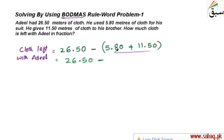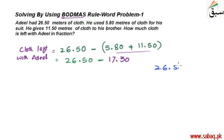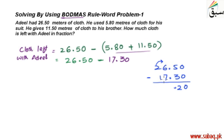So we have 17.30 meters to subtract. Looking at the place values for 26.50 minus 17.30: at the 100ths place we have 0; at the 10ths place, 10 plus 1 is 11, minus 7 is... wait — 16 minus 7 is 9; and here 1 minus 1 is 0. So the result is 9.20.